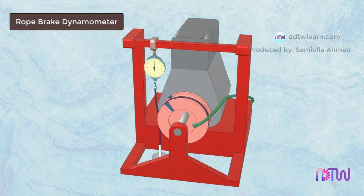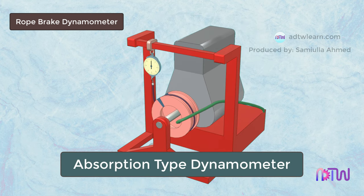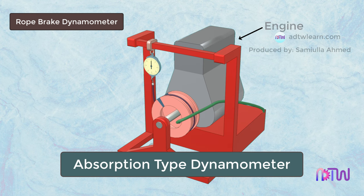A rope brake dynamometer is another type of absorption dynamometer that is used to measure the engine power, similar to that of a prony brake dynamometer.